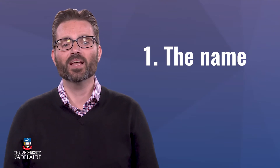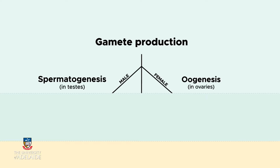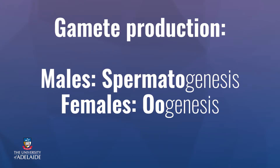So let's start with fact 1: the name. Gamete production is referred to as spermatogenesis in the male and oogenesis in the female. This is because 'spermato' refers to sperm, 'oo' refers to oocytes or eggs, and 'genesis' means create or produce.